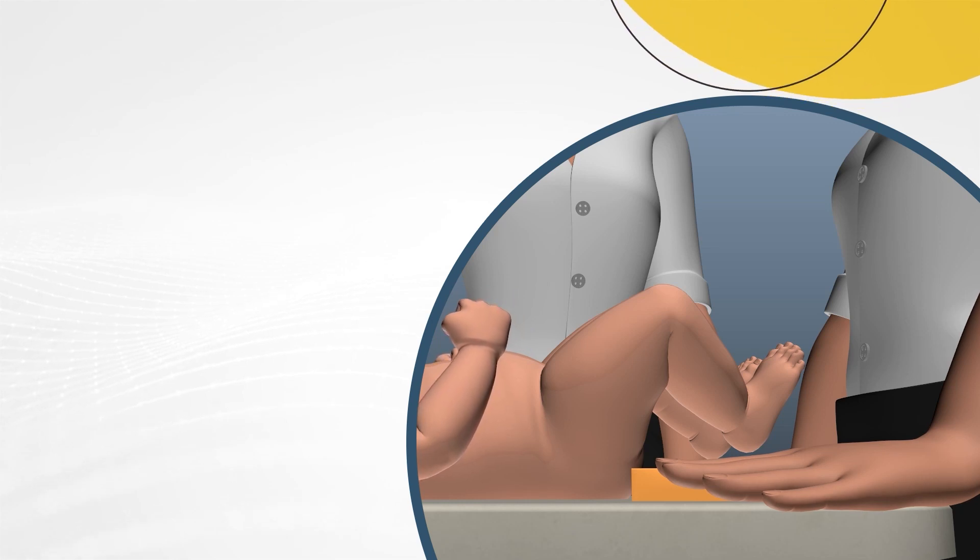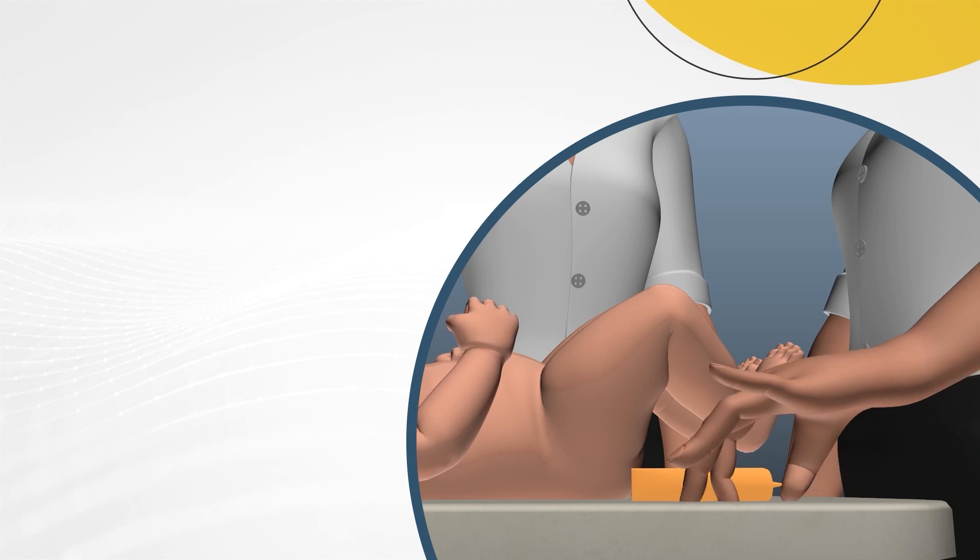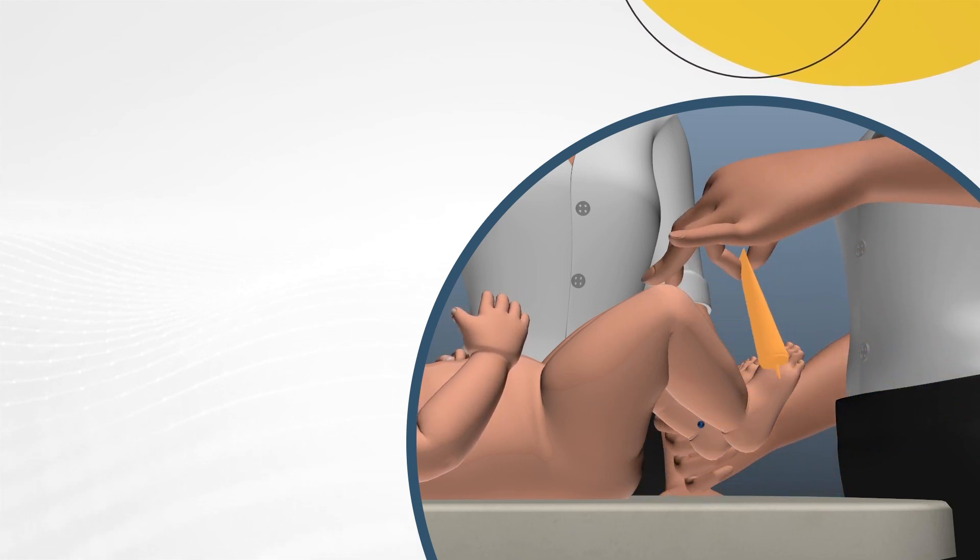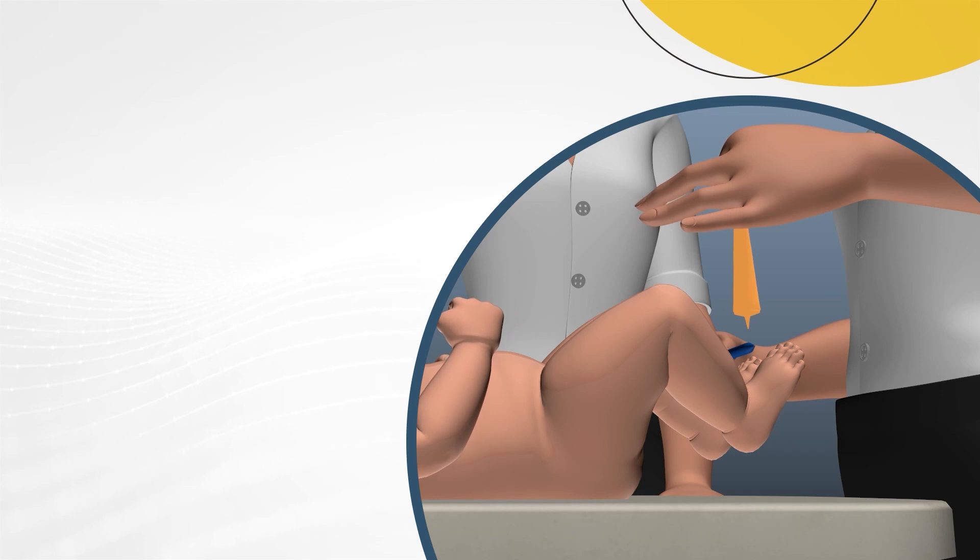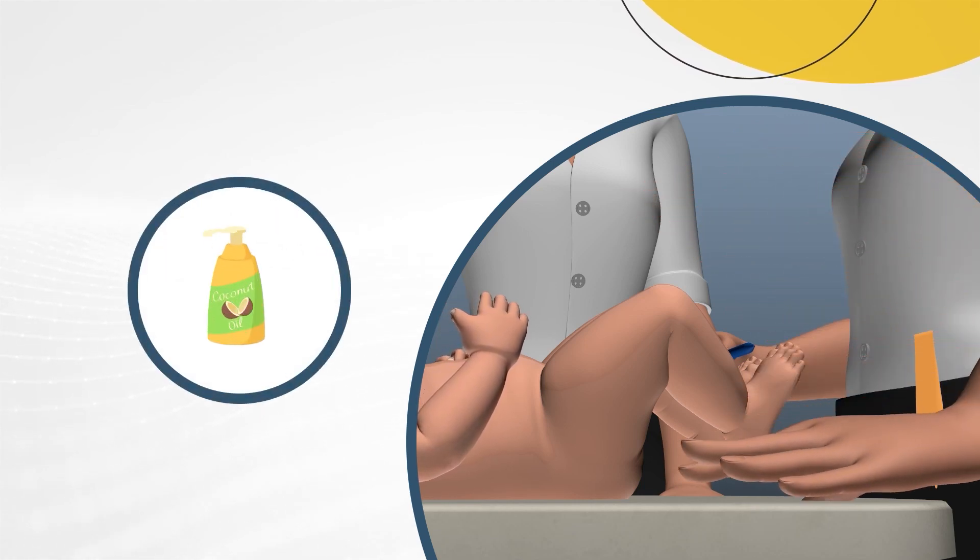The procedure can be done alone or you may take the help of another person. Ensure your child is lying in a comfortable position without napping. Apply the lubricating jelly provided by your doctor, or you can also use other home-based lubricants such as coconut oil, paraffin oil, or olive oil on the dilator.